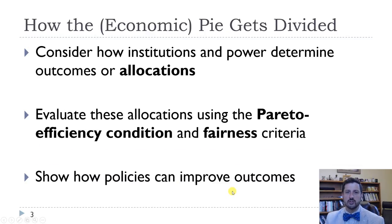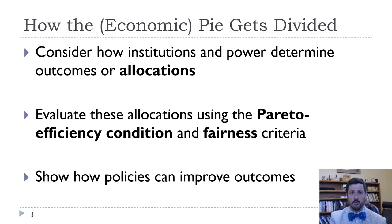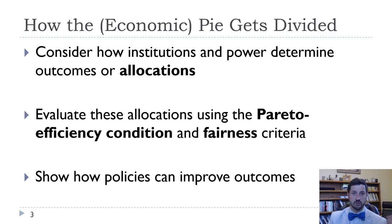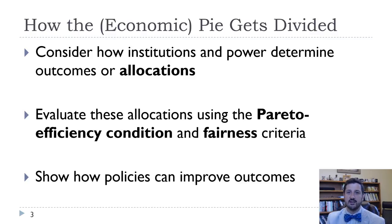In Chapters 1 and 2, what we really talked about was how the economic pie has grown over the last 200 years. We produce a lot more per hour worked, we have a lot of technologies and capital that we didn't have before, and all of that has allowed us to consume a lot more. Chapter 5 is going to be more about how that growing economic pie gets divided — how those allocations are determined.